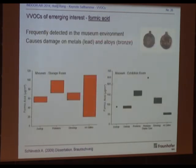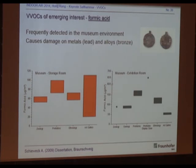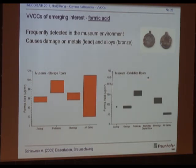Finally, this example is not related to human health but to the museum environment. My colleague Aleksandra Schiewek does a lot of work on air pollution in museum environments, and formic acid is one of the bigger problems, especially for metals such as lead and lead alloys, black bronze. We have measured storage rooms and exhibition rooms. The concentration of formic acid is really high — in display cases it goes up to 600–650 micrograms per cubic meter — and metal coins after a while look severely corroded. So, formic acid is an important VVOC in this context.